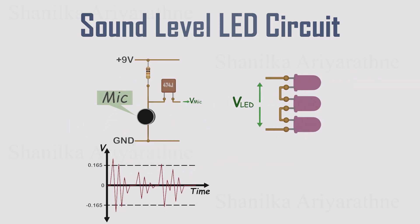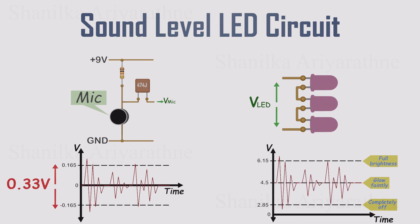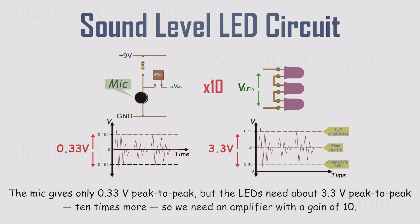Here's what the LEDs actually need: about 4.5 volts to glow faintly, around 6.15 volts for full brightness, and if the voltage drops below 2.85 volts, they switch off completely. Now compare that with the microphone's output. The mic signal only swings by about 0.33 volts peak-to-peak. But to control the LEDs properly, we need the output to swing by about 3.3 volts peak-to-peak. That's almost 10 times bigger. So we need an amplifier with a gain of 10 to stretch that tiny mic signal up to LED driving size.